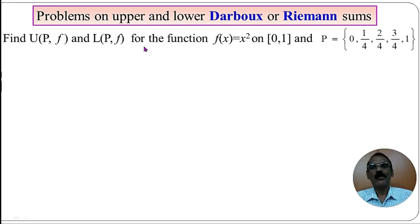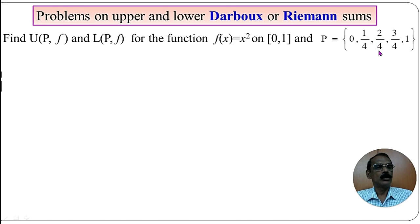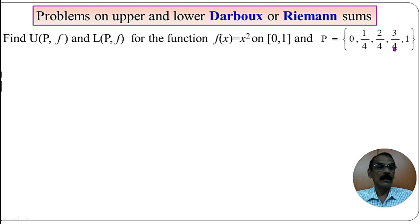We need to find the Upper and Lower sums (UPF and LPF) for the function f(x) = x² on the closed interval [0, 1], with the partition consisting of the elements 0, 1/4, 2/4, 3/4, 1. That is, the given interval [0, 1] is divided into 4 sub-intervals: [0, 1/4], [1/4, 2/4], [2/4, 3/4], and [3/4, 1].